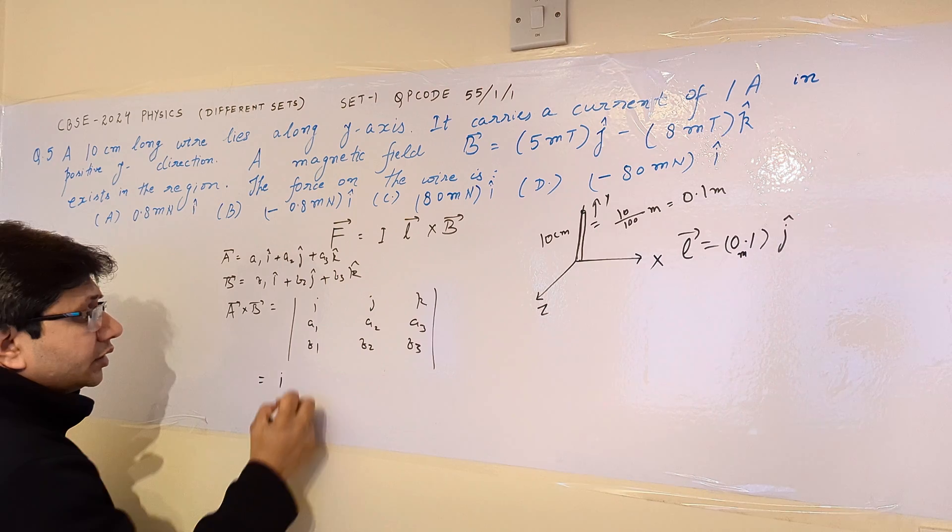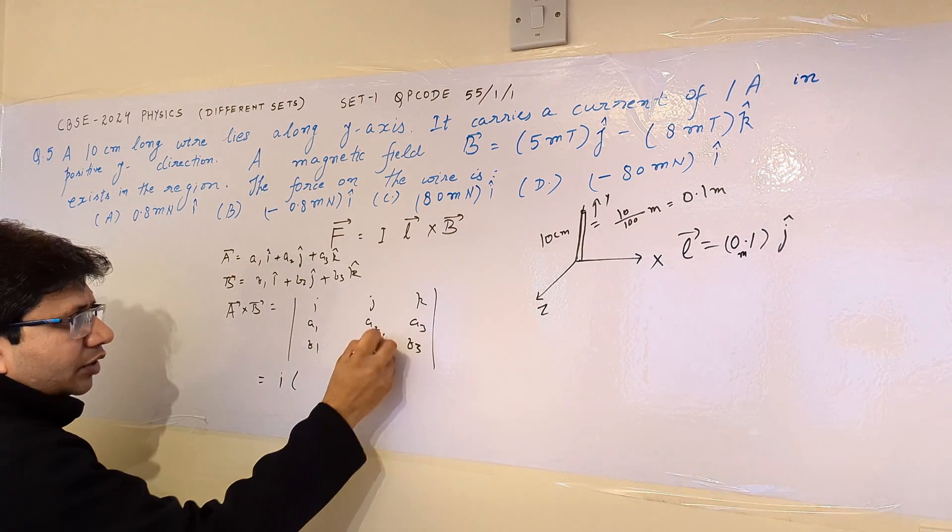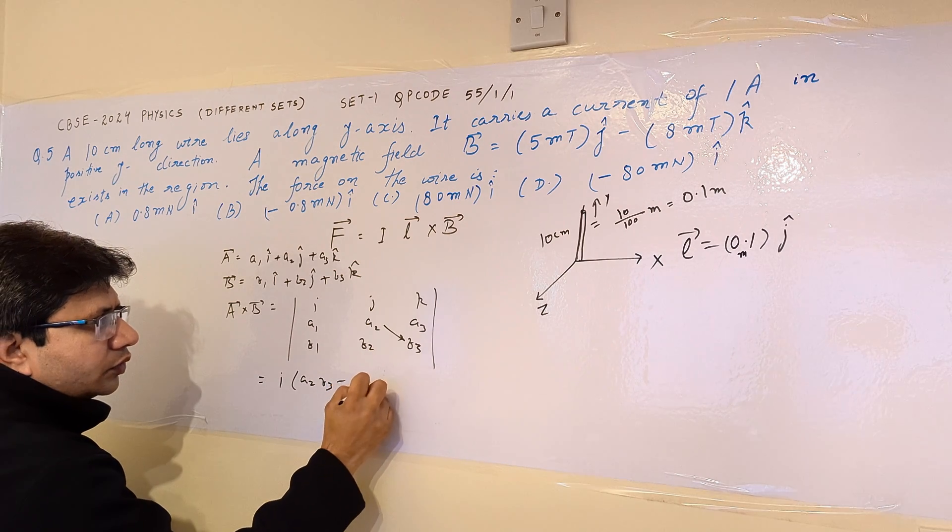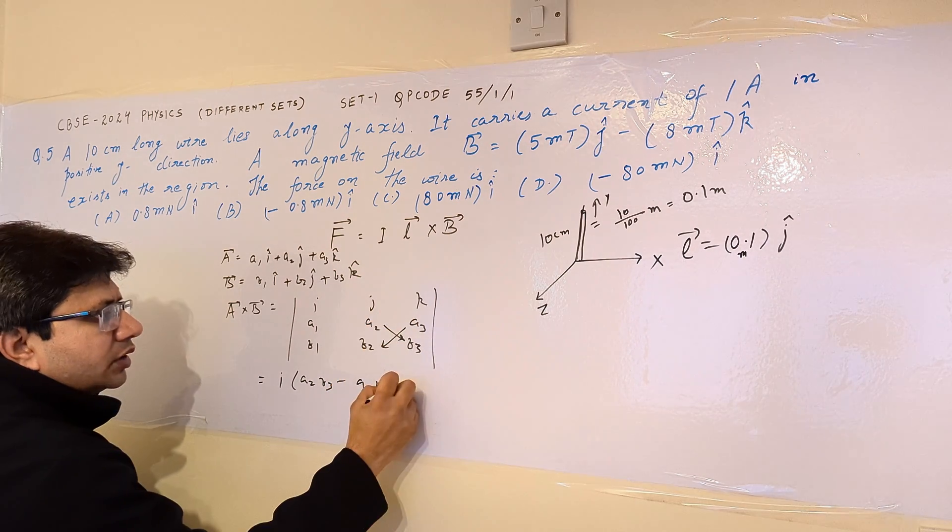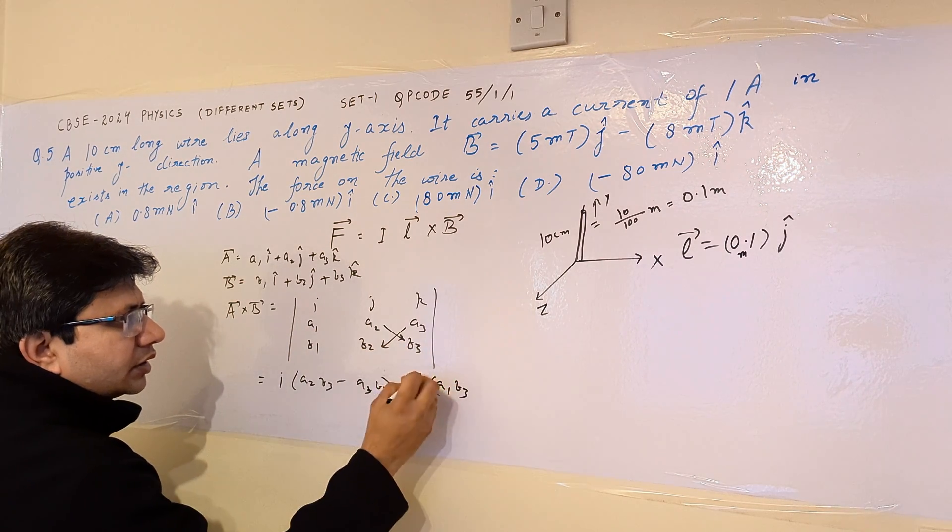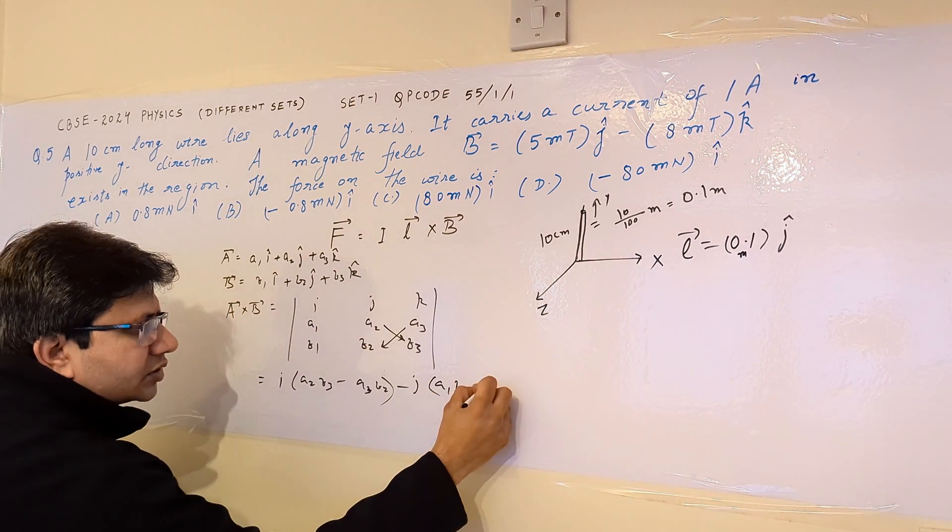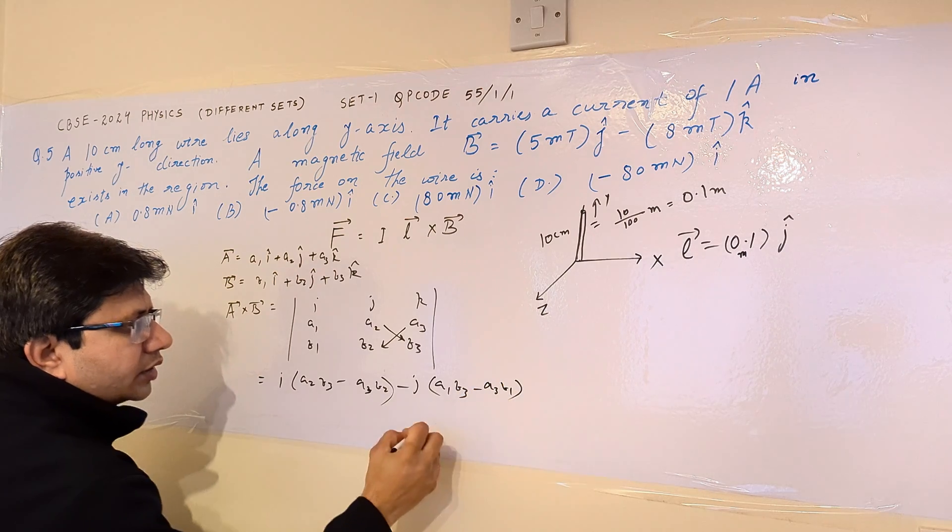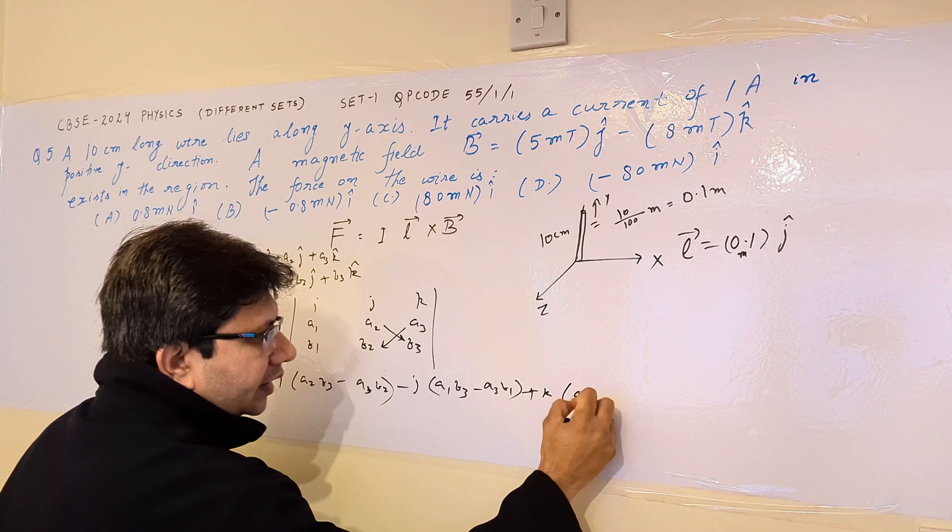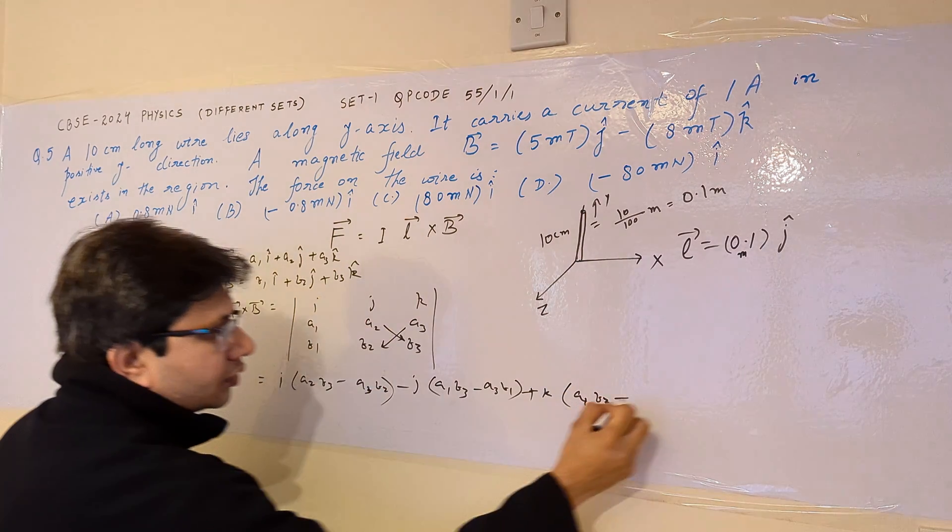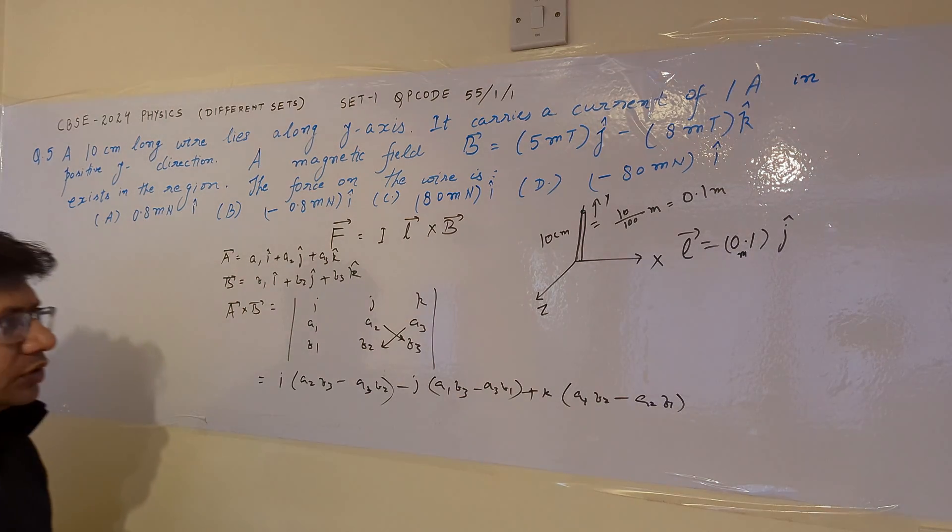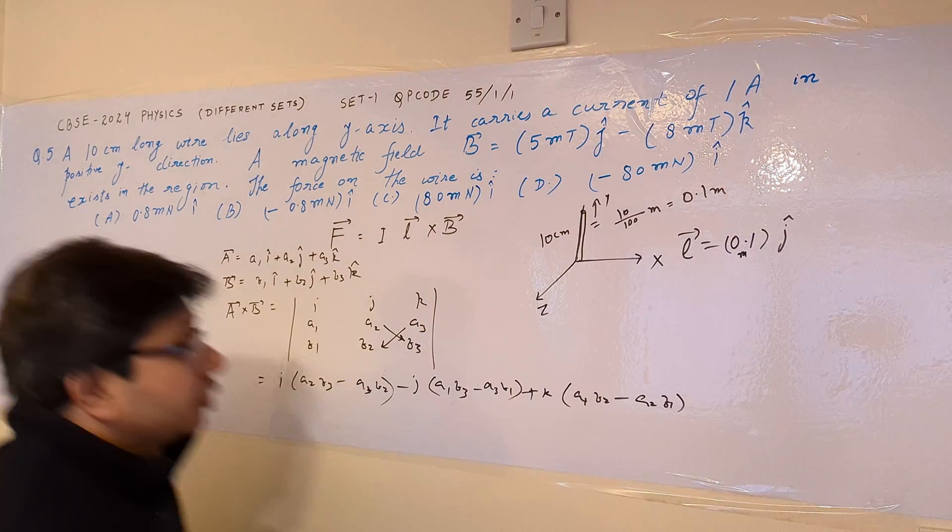So this is the cross product and we are familiar to find out the determinant. So I multiplied by A2 B3 minus A3 B2, then minus J times A1 B3 minus A3 B1, and so on. We have to use this particular concept to solve this problem.